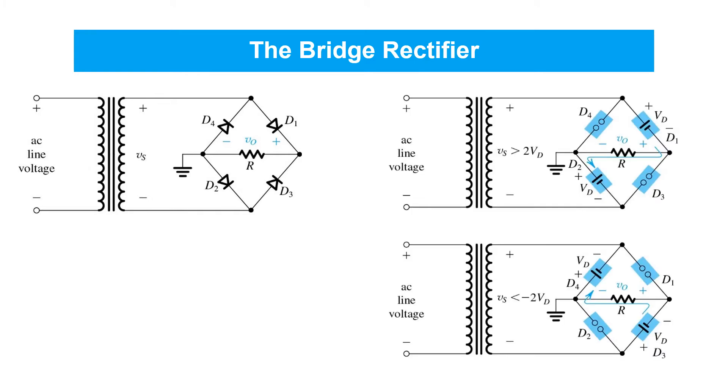First, we'll consider the positive half-cycles of the sinusoid at VS, and we'll, in particular, think about what happens when VS is relatively large and positive, specifically where it's greater than two forward diode drops. In the case of silicon diodes, using a constant forward voltage drop model, that would be about 1.4 volts, 2 times 0.7.